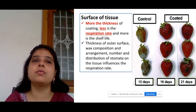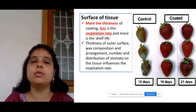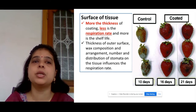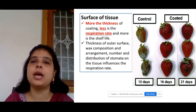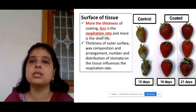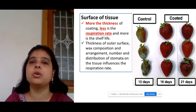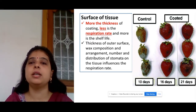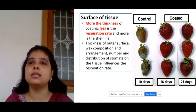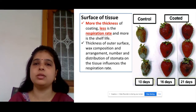The next factor is the surface of tissue. When the outer covering of a produce is thick, there is a lower respiration rate and greater shelf life. You can see in the figure that by applying an outer coating on strawberry, the shelf life is enhanced from 10 days up to 16 to 21 days.